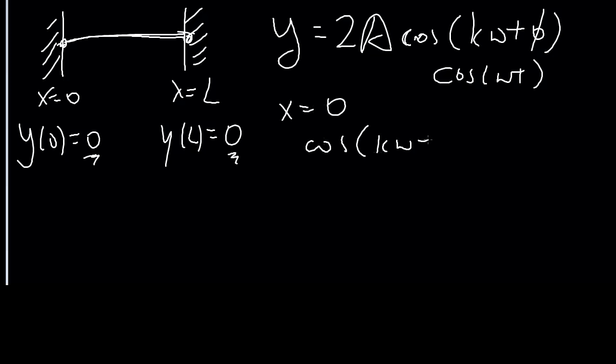So this is cos(φ) equals zero; simplest solution, φ should be π/2. Which makes sense because you would expect it to be kind of like a sine wave for you to hit zero at that point, so that's why we have the π/2 phase shift.